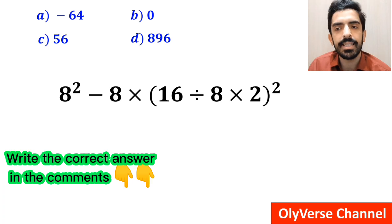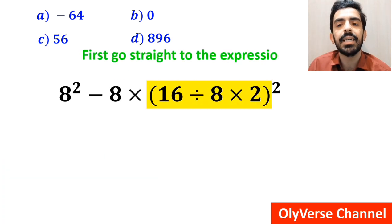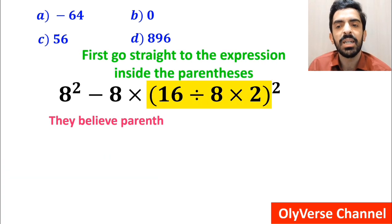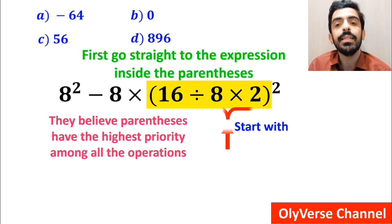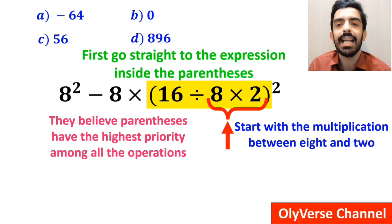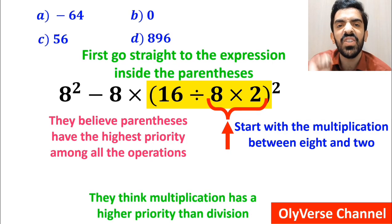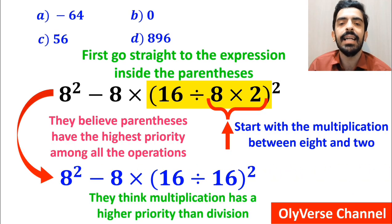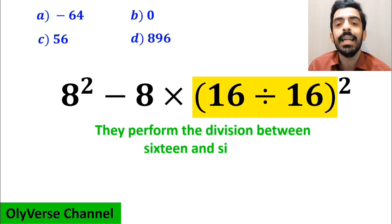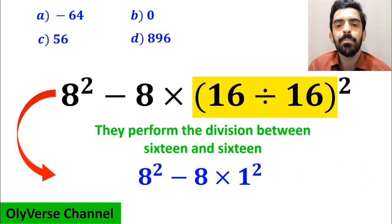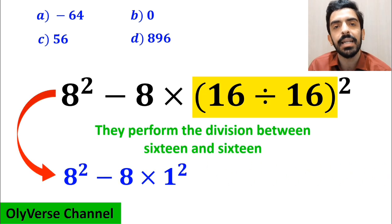Also, some other people when solving this question first go straight to the expression inside the parenthesis because they believe parenthesis have the highest priority among all the operations. And they start with the multiplication between 8 and 2 because they think multiplication has a higher priority than division. So they rewrite this expression as 8 squared minus 8 multiplied by 16 divided by 16 inside the parenthesis and all squared. In the next step, they perform the division between 16 and 16, writing the expression as 8 squared minus 8 multiplied by 1 squared.